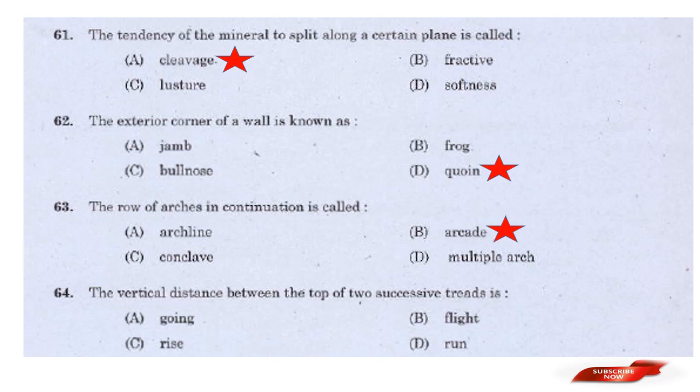Question: The vertical distance between the tops of two successive treads is — options: Going, Flight, Rise, Run. Answer: Option C — Rise. The vertical distance between the tops of two successive treads is the Rise.